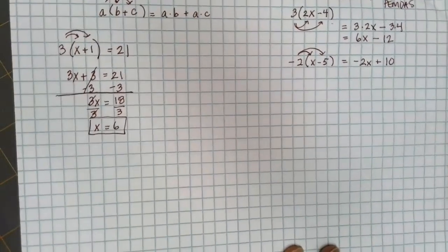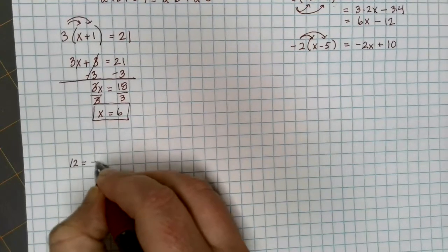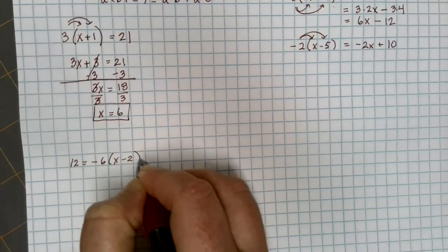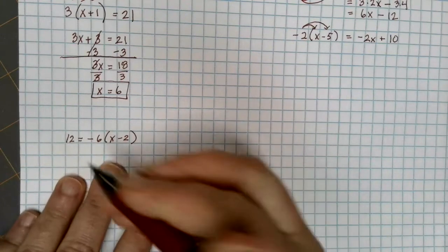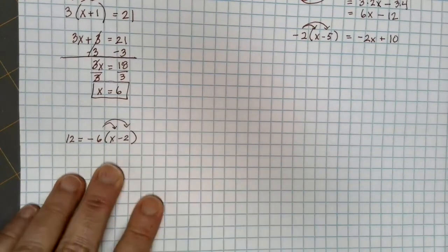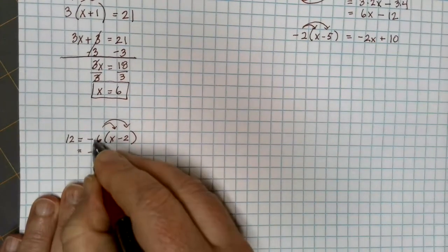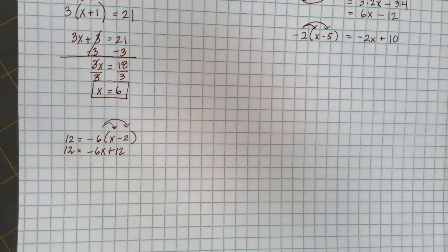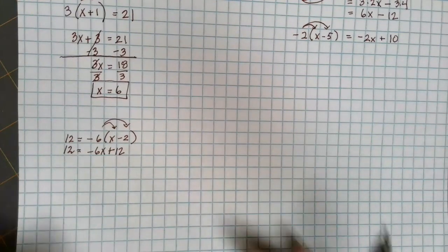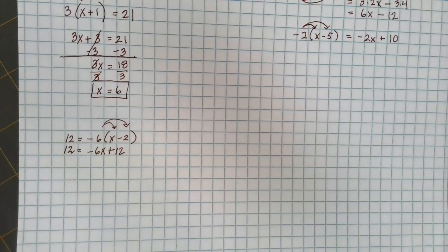Let's look at another example. Suppose that I have 12 equals negative 6 times x minus 2. I have another problem with parentheses, so I can get rid of them using the distributive property. Multiply that negative 6 through. Negative 6 times x is negative 6x. Negative 6 times negative 2 gives me a plus 12, and I still have 12 on the other side of the equal sign. Stay vertical — keep everything going so you can bring down anything that doesn't get canceled and not lose anything.